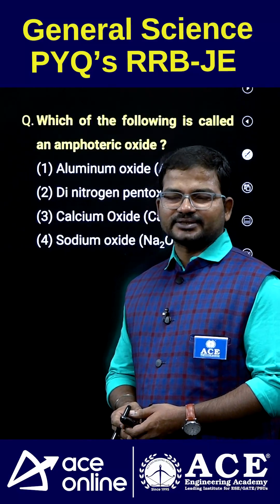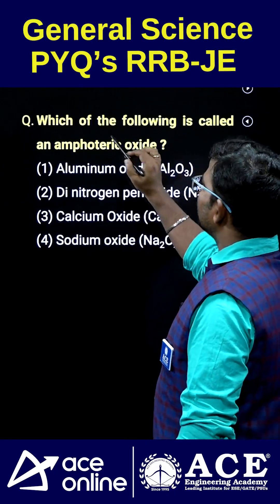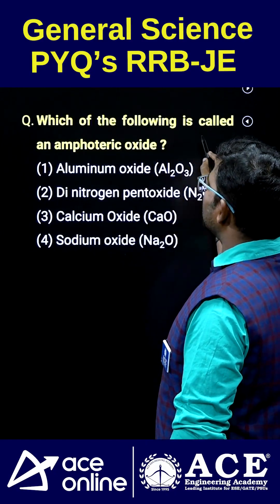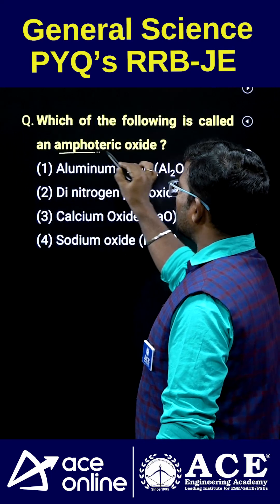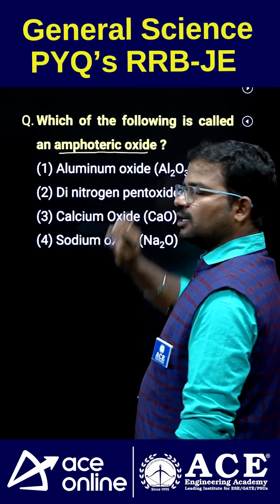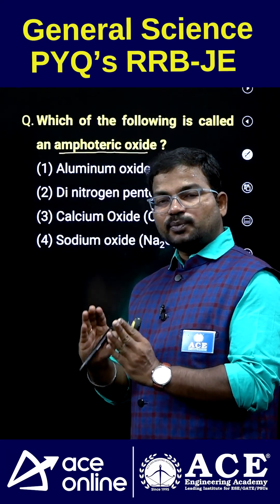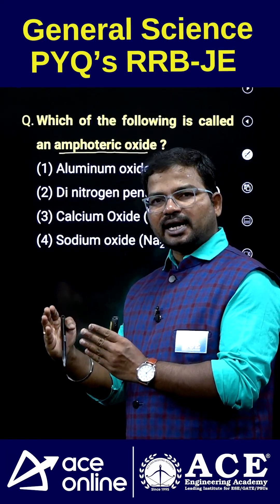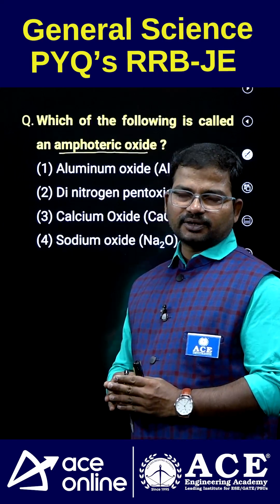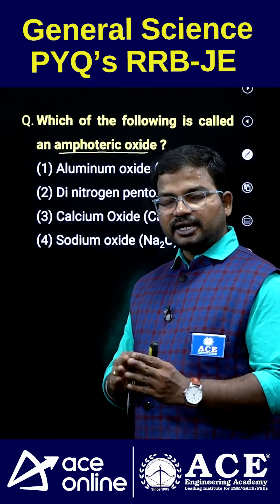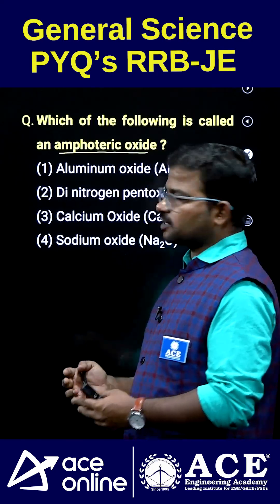Hi students, welcome to ACE Online. See this important question: which of the following is called an amphoteric oxide? Amphoteric means it can react with both acidic and basic materials.